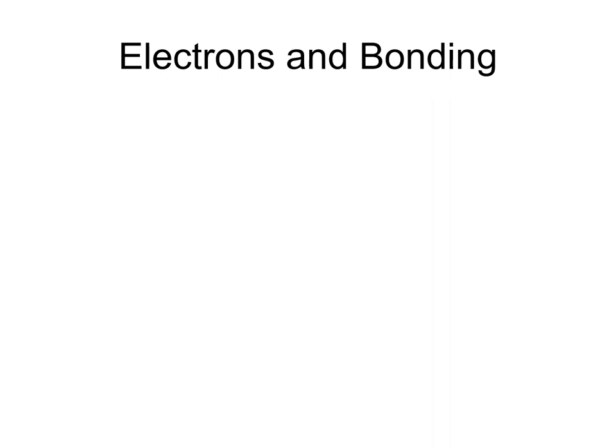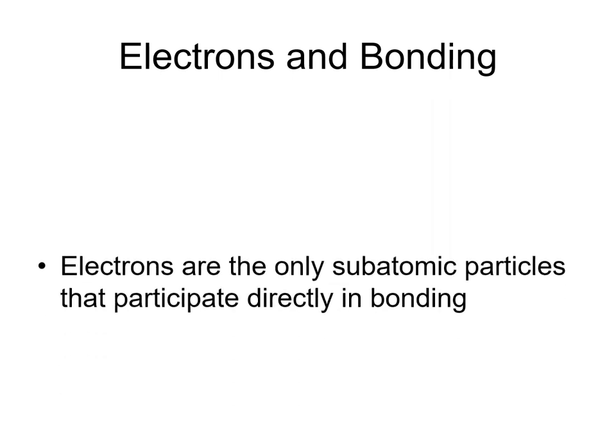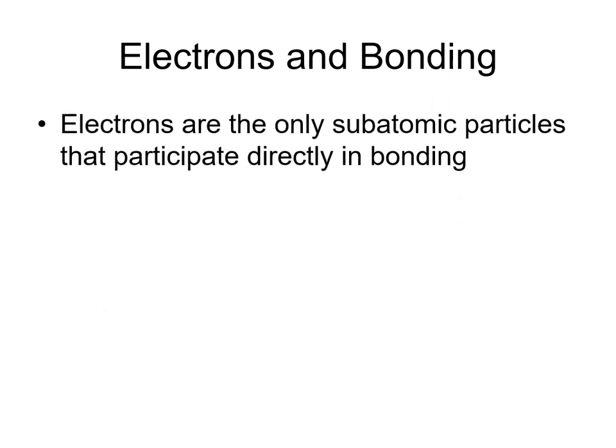Now that we understand that atoms can interact with one another to form chemical bonds, let's discuss the details of how this occurs. We're going to focus on the electrons, because electrons are the only subatomic particles that participate directly in bonding. This is not to say that protons don't play a role — we're just going to focus on the electrons because they're the most important.